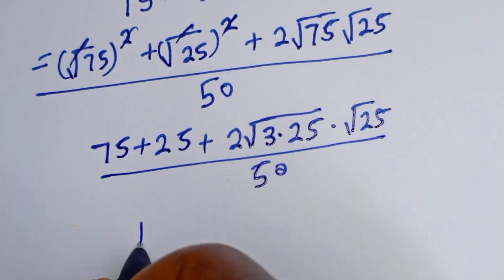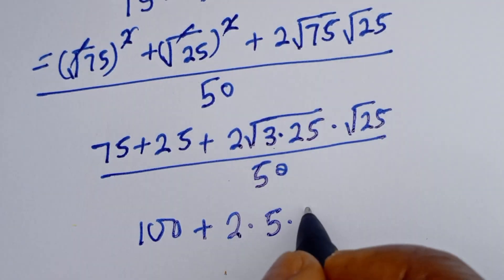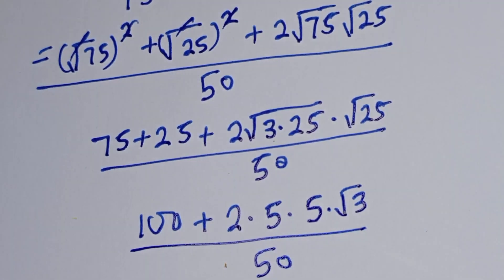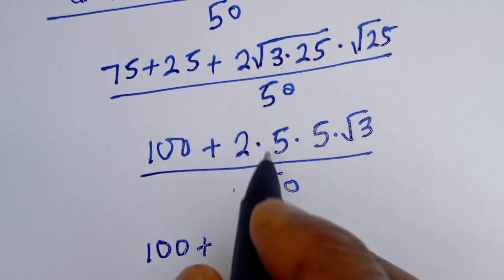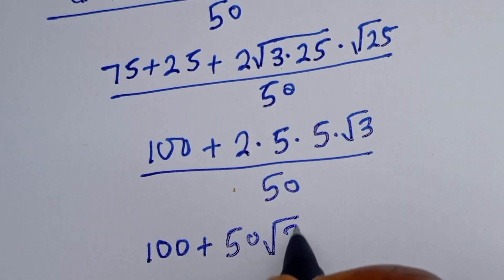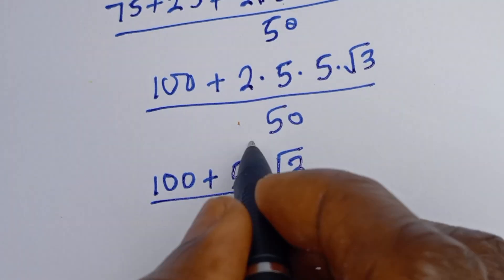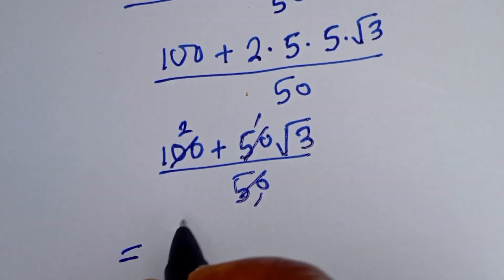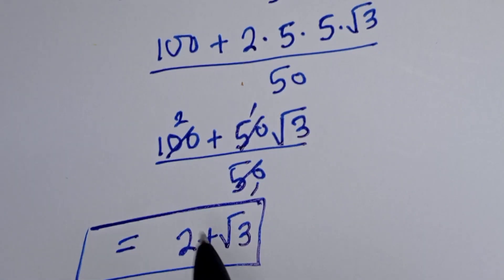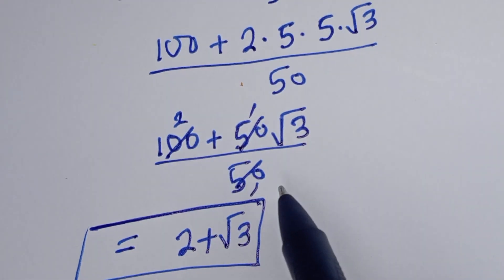So 75 plus 25 we have 100, plus 2 multiplied by root 25 which is 5, multiplied by root 3, everything over 50. This is 100 plus 2 times 5 times 5, that is 50 root 3, over 50. Dividing through by 50 gives us 2 plus root 3. And this is the final answer. You can see that if you use the first method and the second method you are going to get the same answer. Thank you for watching, please don't forget to like, share, comment and subscribe to my channel. Bye bye.